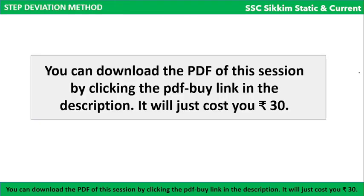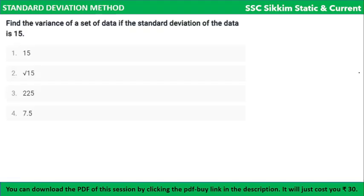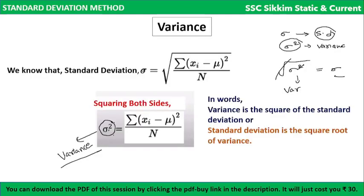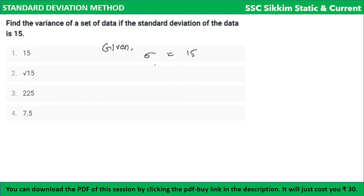The session PDF can be downloaded from the link in the description box for 30 rupees. Now let us do a variance question: find the variance if the standard deviation is 15. Given: sigma = 15. Since variance = sigma², variance = 15² = 225. The correct answer is 225.